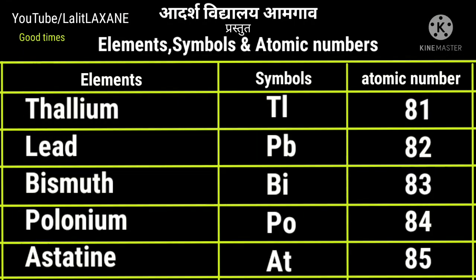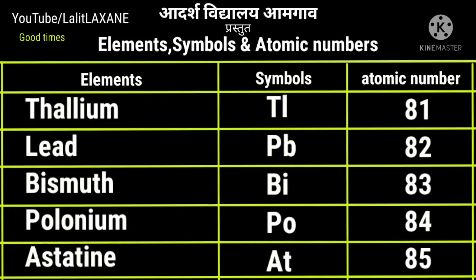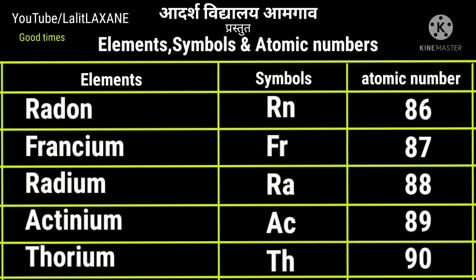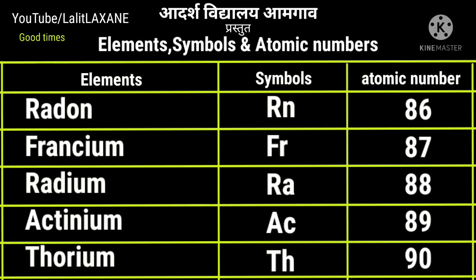With atomic number 81 there is thallium Tl. Lead Pb, that stands for plumbum, 82. Bismuth Bi with atomic number 83. Polonium Po, atomic number 84. Astatine At with atomic number 85. Next with atomic number 86, radon Rn. Francium Fr with atomic number 87. Radium Ra with atomic number 88. Actinium Ac, 89, and thorium with atomic number 90 and symbol Th.